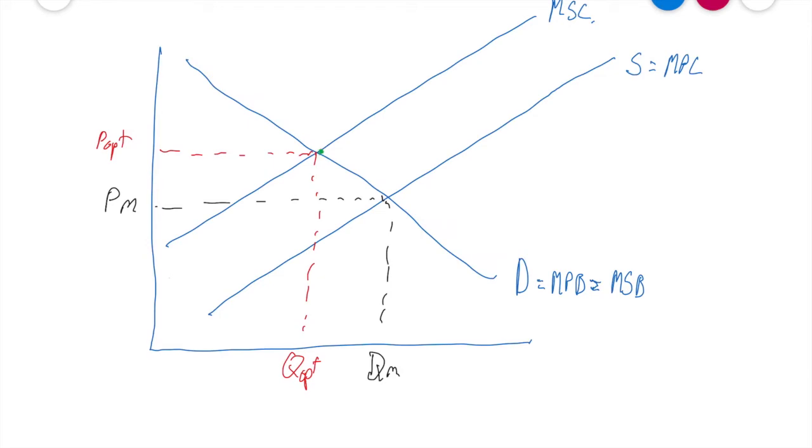So what we're going to do is we're going to draw a triangle here from our optimum point to where we're actually operating from. Our optimum equilibrium point to our actual equilibrium point here.